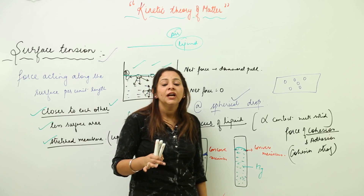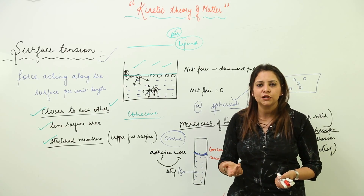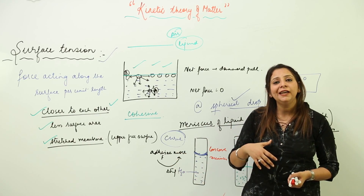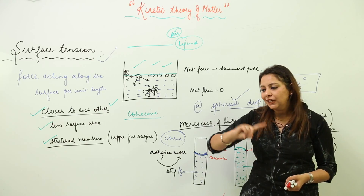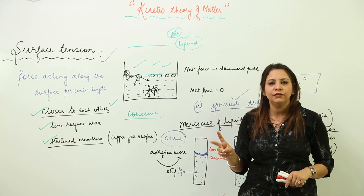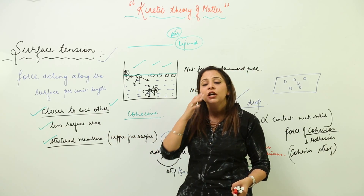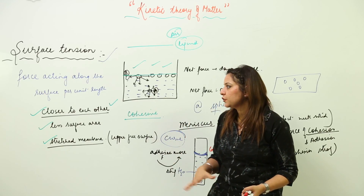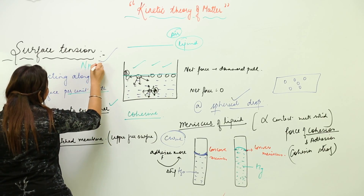Water has the maximum surface tension among common liquids. However, adding any substance to water — such as salt or sugar — lowers the surface tension. Also, if you increase the temperature, the molecules start moving away from each other, so they are no longer as close, and surface tension decreases with increasing temperature. Regarding units: since surface tension is force per unit length, the SI unit is Newton per meter, and the CGS unit is dyne per centimeter.